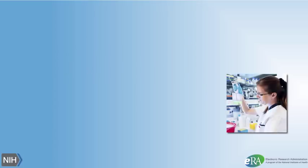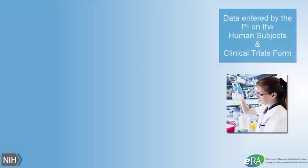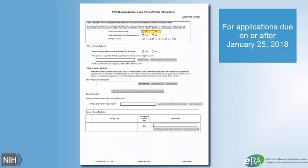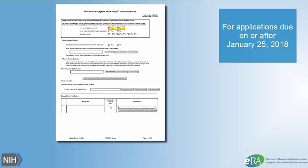The way it works is this. Data is initially entered by the principal investigator, or PI, on the Human Subjects and Clinical Trials Information Form in applications submitted for due dates of January 25, 2018, and beyond.